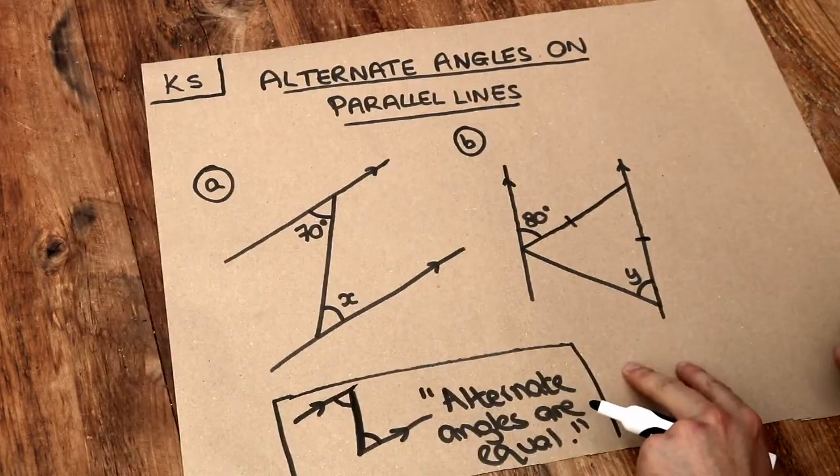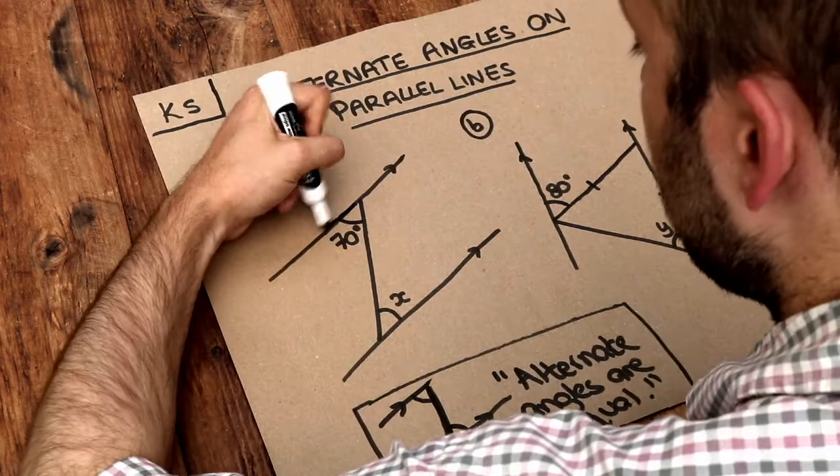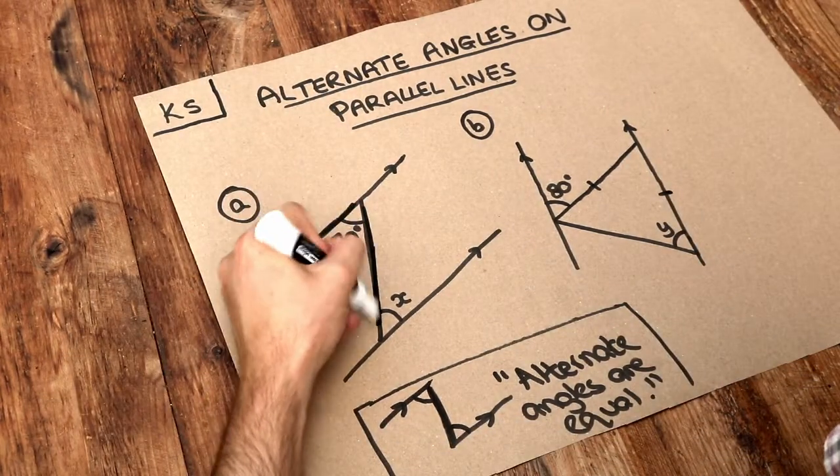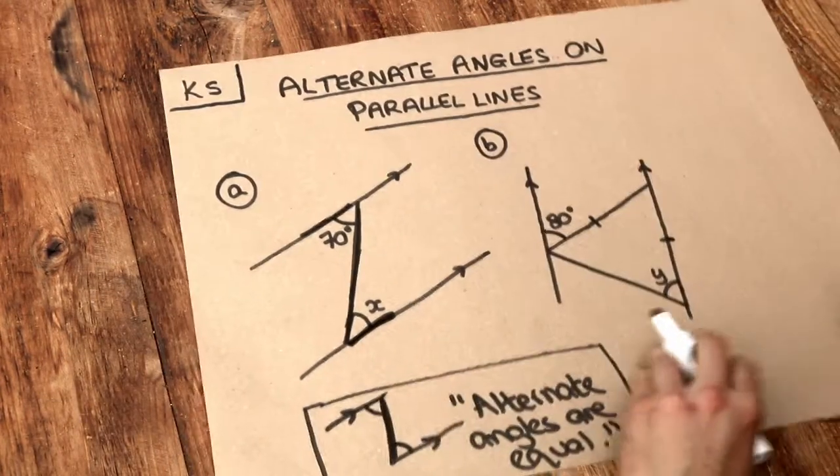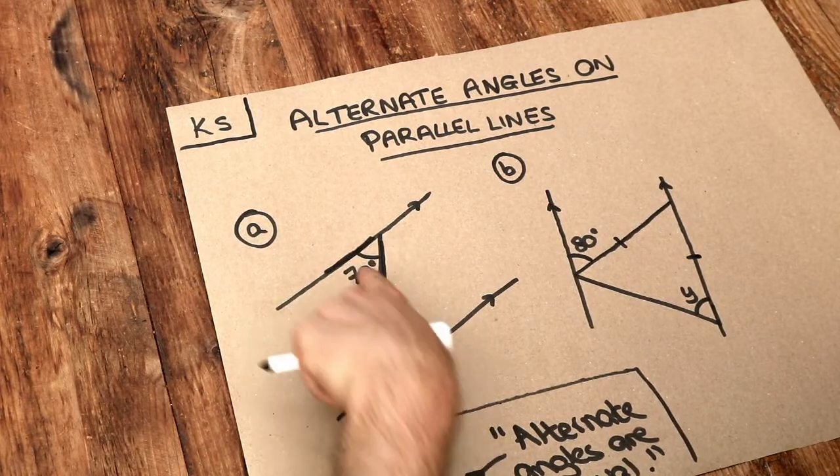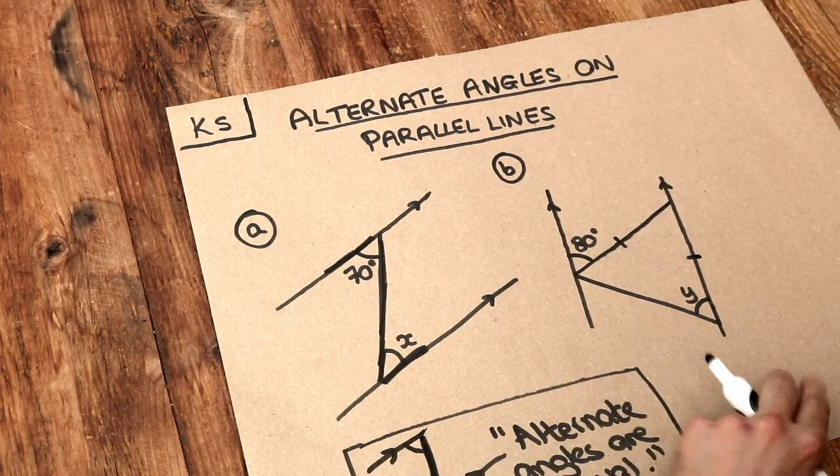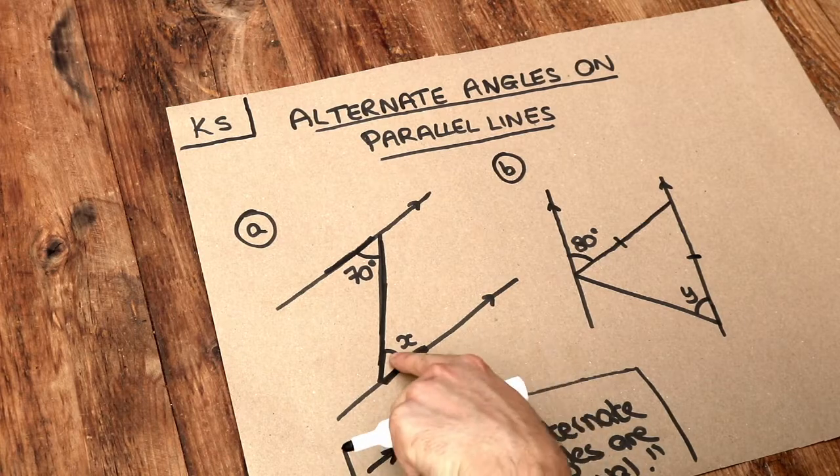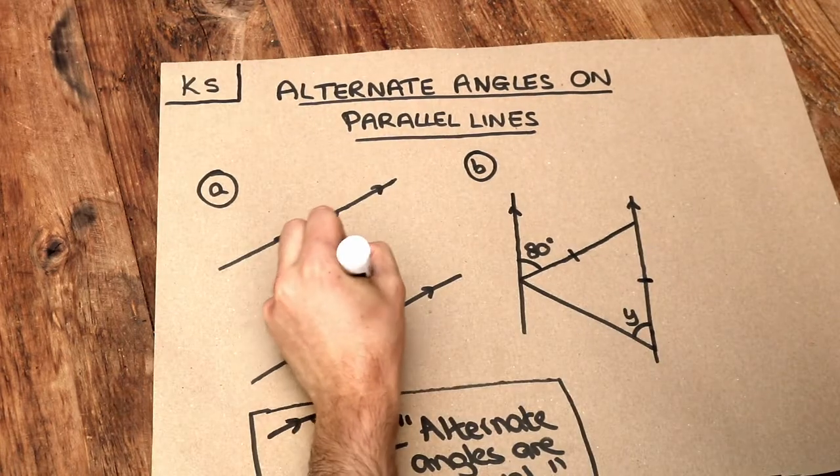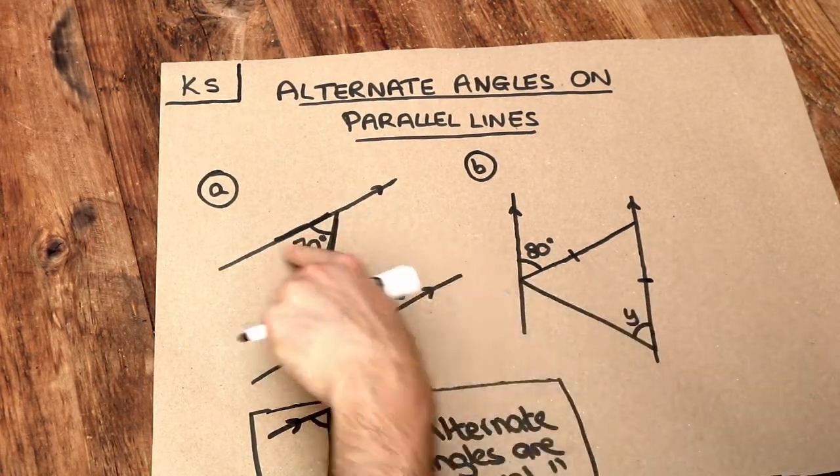So let's apply it to these two problems. For problem A, you might be able to see the Z here. The angle between the first and the second line, which is 70 degrees, must be the same as between the second and the third line, which is this X. So that X is just 70 degrees because they are alternate angles.